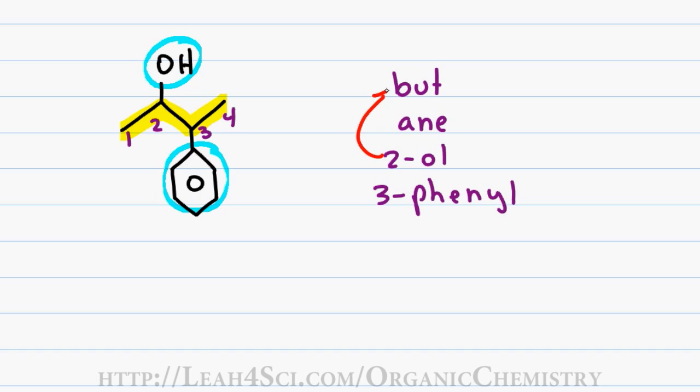I pull the two from all in front of the parent name allowing me to drop the e and ain for a final name of three phenyl, two butanol.